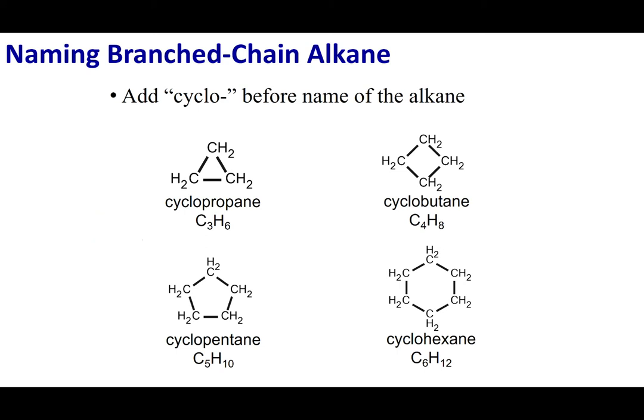Now, if we have a cycloalkane, you'll notice that its formula is a little bit different. It's going to be CnH2n. And that's because to make a cycle, we have to remove two hydrogens so that it can form that ring.